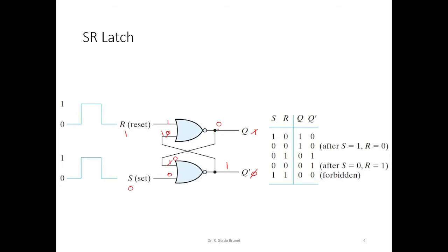The circuit has now stabilized. Q is 0, Q-bar is 1, and the circuit is in the reset state. We had Reset equal to 1, and therefore we have made Q equal to 0. This is the reset state.